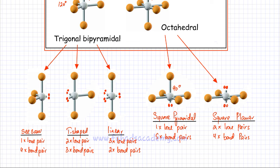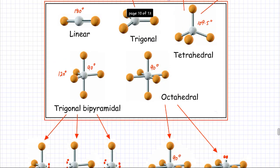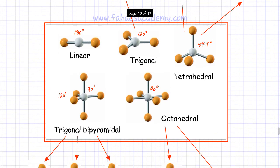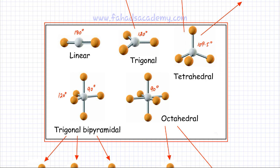These five shapes are the basic shapes. The rest of the shapes are derived from these depending on how many lone pairs are added and how many bonds there are in a molecule.